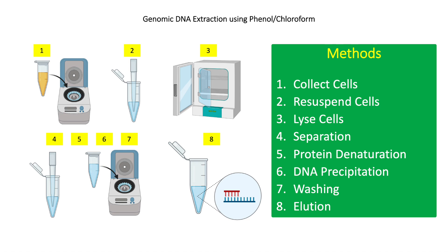For step four, add 700 microliters of phenol-chloroform-isoamyl alcohol and mix well by inverting the tube. This will separate the lipids and cellular debris containing proteins into the organic phase (the bottom part of the solution) and the DNA into the upper aqueous phase. Centrifuge at 13,000 RPM for 10 minutes. Pipette the aqueous phase and transfer into a fresh tube. Repeat step four twice.